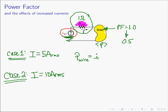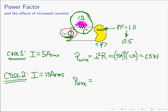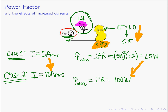A resistor has a power absorbed of I squared R. In the first case with one ohm resistance, we have 5 amps squared times one ohm, absorbing 25 watts in the wire. In the second case, I squared R gives us 100 watts absorbed. By simply worsening our power factor from 1.0 to 0.5, the current doubled, so the power absorbed by the utility's wires went up by a factor of four because of the squared term.